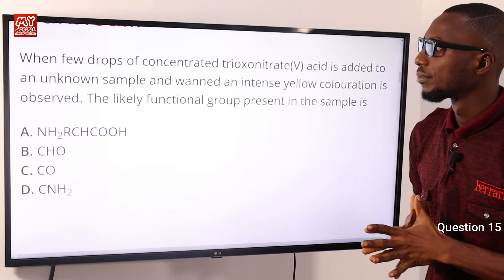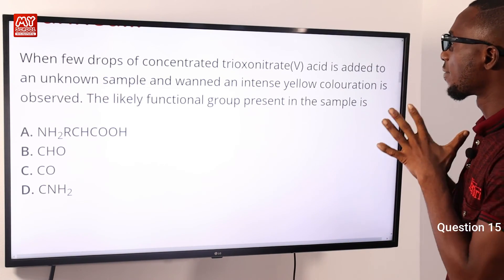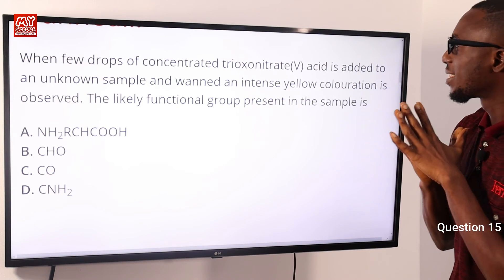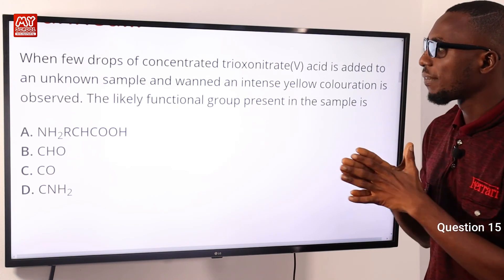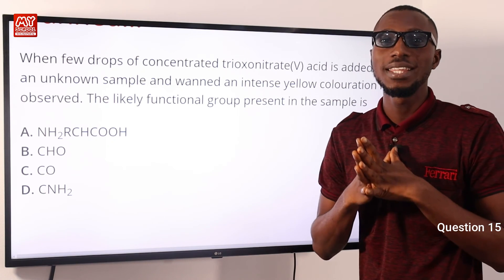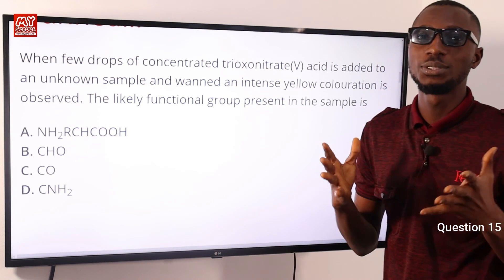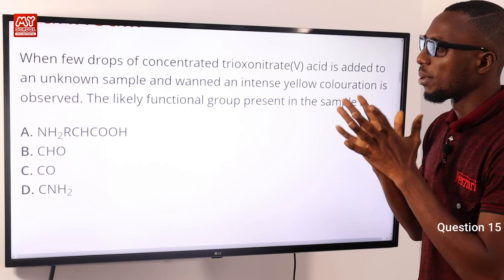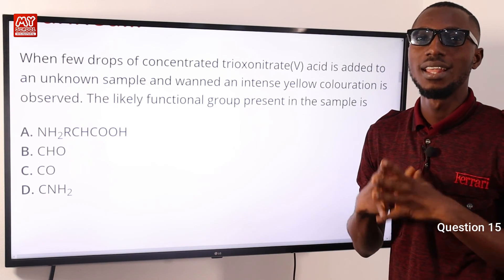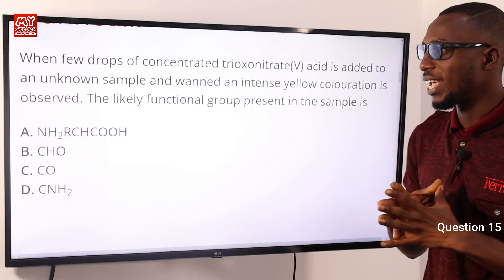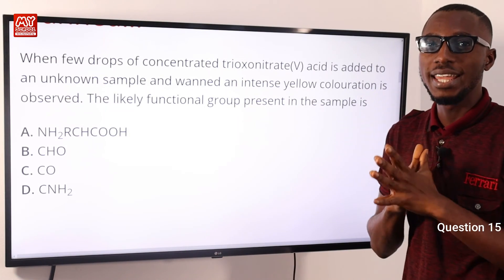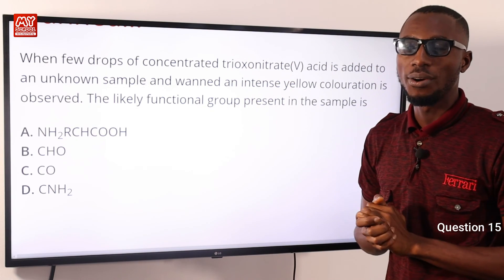Question fifteen: when a few drops of concentrated trioxonitric acid are added to an unknown sample and warmed, and an intense yellow coloration is observed, the likely functional group present in the sample is what? The functional groups present include the amino group, the carboxyl group, and a side chain — consistent with amino acids, which are the basic components of protein. This is a test to confirm the presence of protein, referred to as the xanthoproteic test. Option A is very correct.